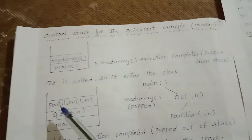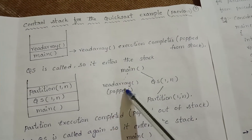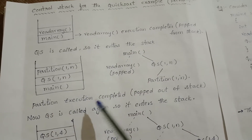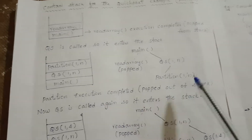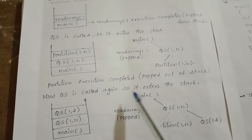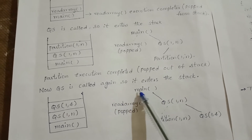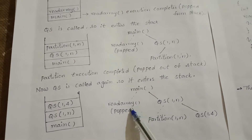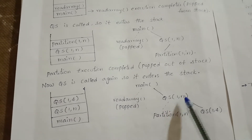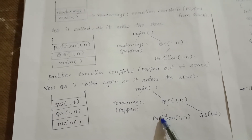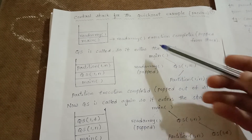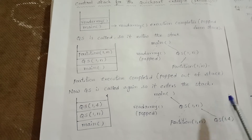After main and quicksort are in the stack, partition is called and enters the stack. After read array is popped, quicksort enters and then partition enters. When partition execution is completed, it is popped out of the stack. Quicksort is then called again. So main is the root node, read array is popped, quicksort is called, partition completes, and quicksort is called again — this is the control stack for the quicksort example.